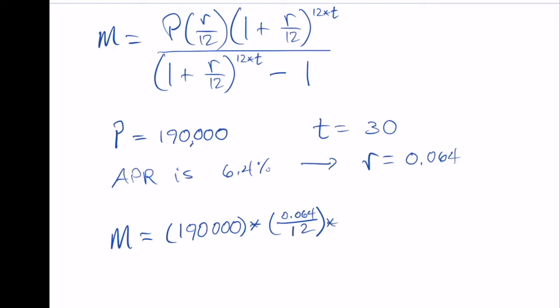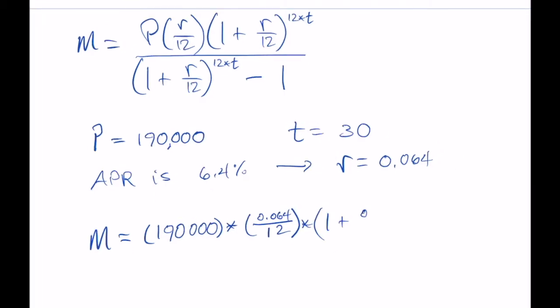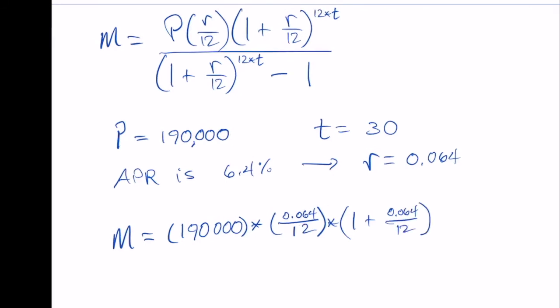And that's that r over 12. And then times, open parentheses, 1 plus 0.064 over 12. And then raised to parentheses, 12 times 30 years.